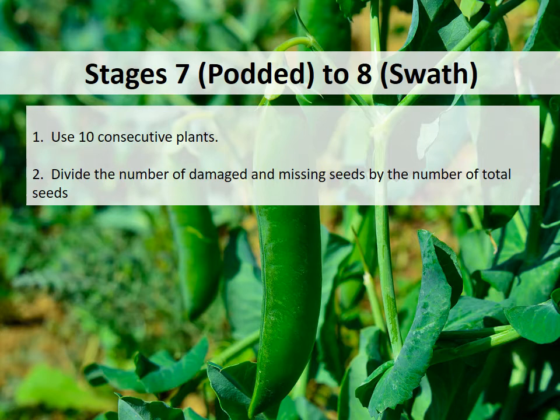Divide the number of damaged and missing seeds by the number of total seeds. Peas in pods grown for seed have to be examined carefully and could have more allowable seed loss damage. Otherwise, procedures are the same when doing all hail assessments. Pod numbers per plant vary, as do seeds in pods. Usually, two full flowers per node will mean two pods per node will develop.